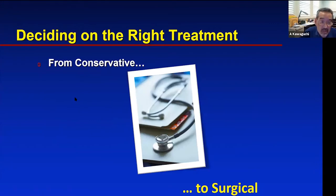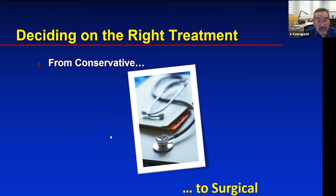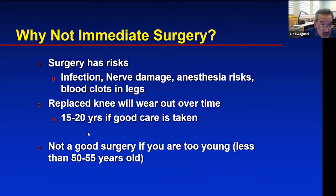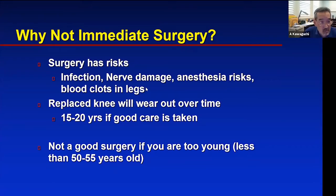Once I explain arthritis, patients ask what they can do. There's conservative treatment and then surgical. If you have bad enough arthritis, why not go immediately to surgery? Well, surgery has risks — infection, nerve damage, anesthesia risks, blood clots in the legs, and other unforeseen complications. The percentages are very small, but if you get any of these — especially an infection — it could be a significant life changer.